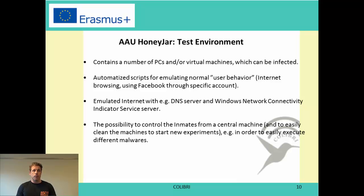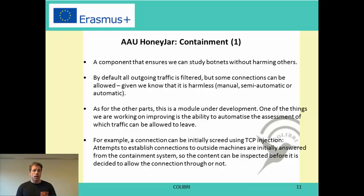The AAU HoneyGuard architecture has three main components. First, a containment component that ensures no harmful traffic leaves the test environment onto the internet, while allowing necessary control traffic through. Second, a monitoring and analysis component that collects data traces for analysis. Third, a test environment containing both physical and virtual machines, centrally controlled to specify which malware is installed where, with scripts to simulate normal user behavior and an infrastructure for emulating the internet so machines believe they are online even behind the containment.